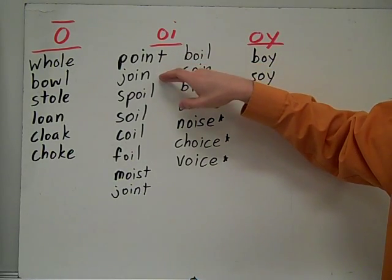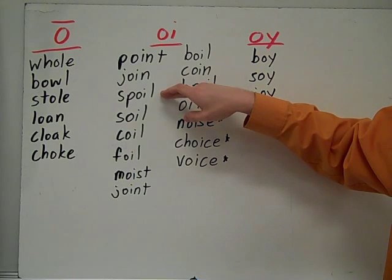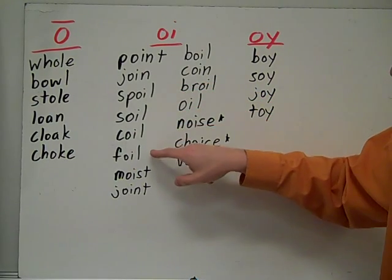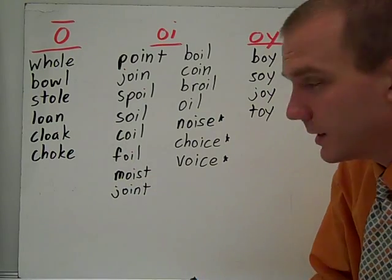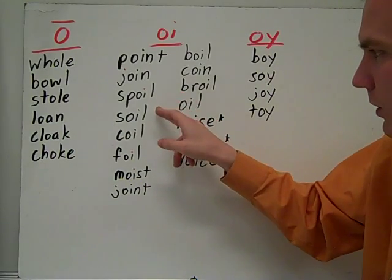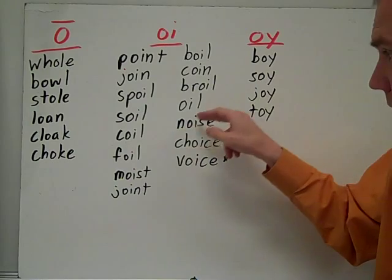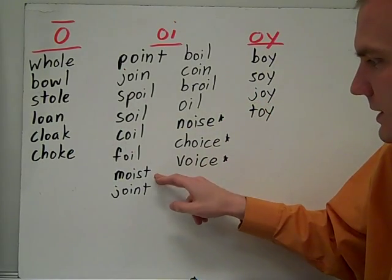OI. Point, join, spoil, soil, coil, foil. Hear that? It's actually with the L you hear really. Spoil, soil, coil, foil, oil. Moist, joint.